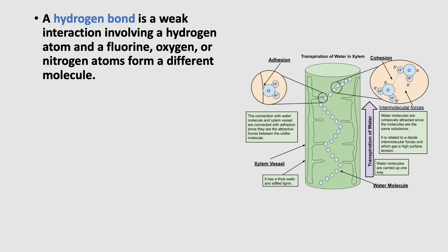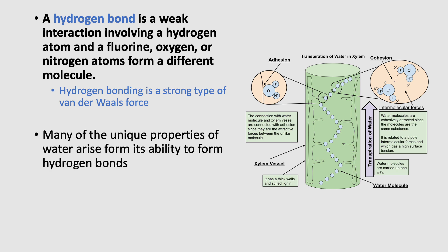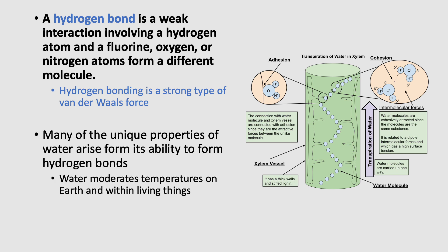Hydrogen bonding can involve fluorine, oxygen, or nitrogen atoms forming different molecules. Hydrogen bonding is a strong type of van der Waal force, and many of the unique properties of water arise from its ability to form hydrogen bonds — including moderating temperature on Earth, moderating the temperature of living things, and allowing water to climb. These features are critical to how humans and all living things on Earth are able to survive.